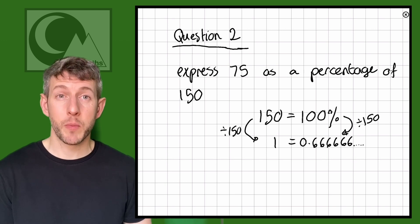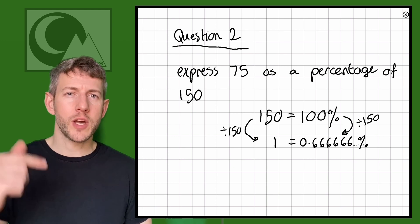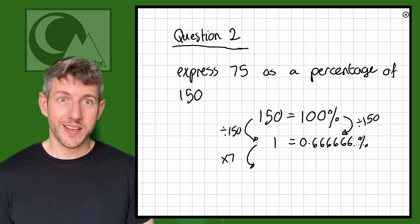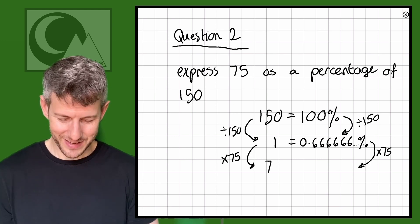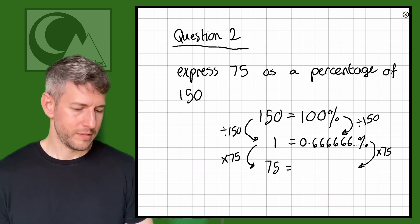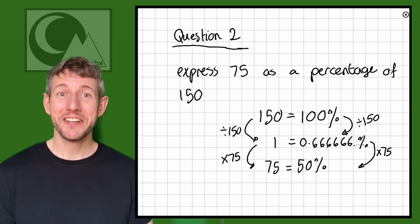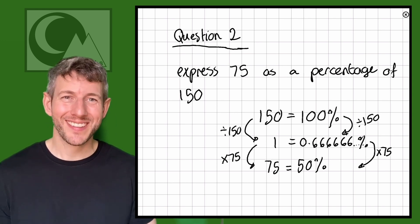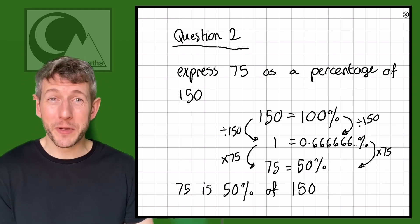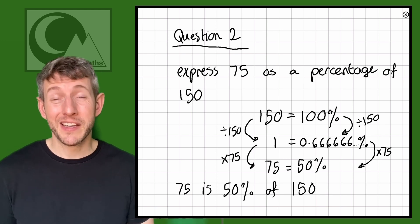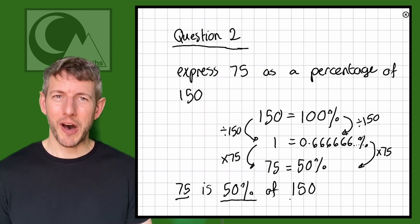So we know that 1 is worth 0.6666 repeating. We want 75. So we're going to do 1 times 75 gives us 75, and 0.6666 repeating times 75 gives us 50. And that's correct, 50. Yeah that's correct because 75 is 50% of 150, which we sort of knew anyway because it's half. 75 is half of 150. 50% of 150 is another way of saying half. So 75 is 50% of 150.